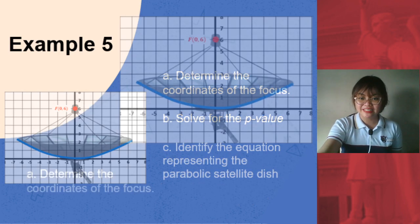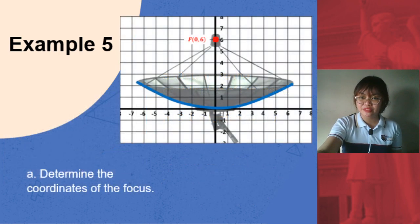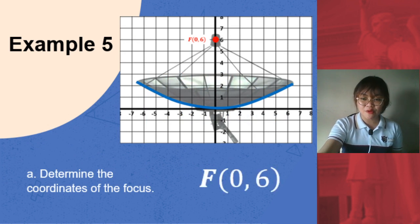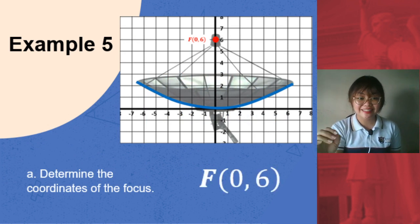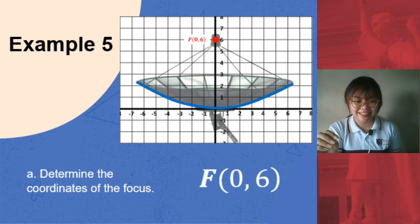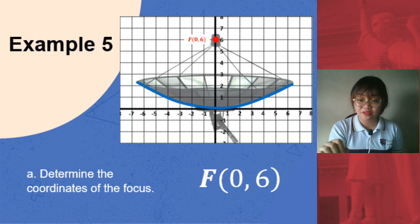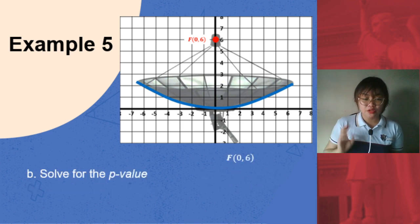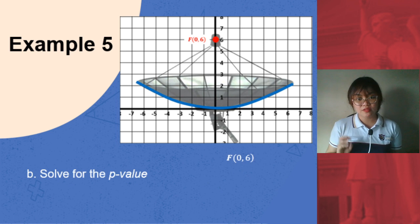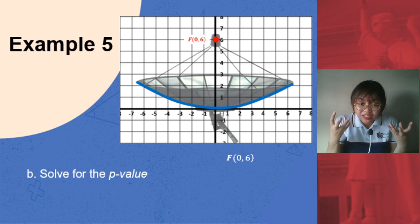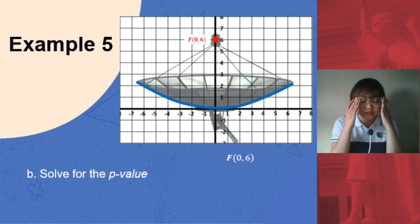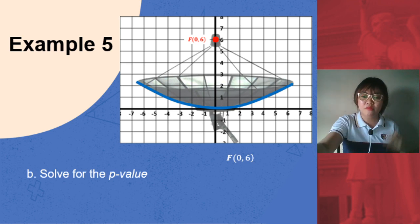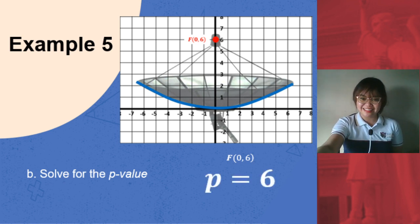With this, we are now able to determine that the coordinates of our focus is at (0, 6). After that, solve for the p-value. Knowing that the focus is (0, 6), you simply extract that coordinate, and that will serve as your p-value, which is 6.